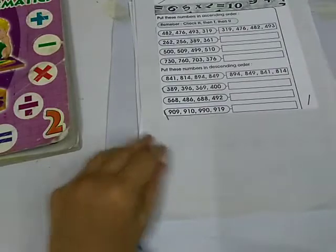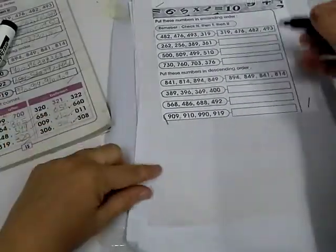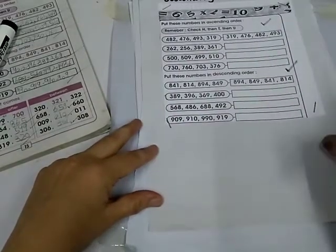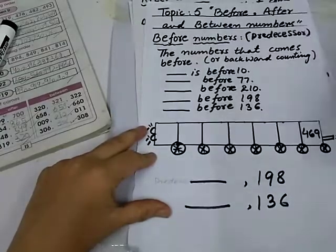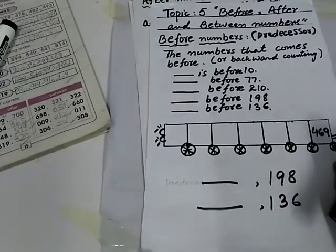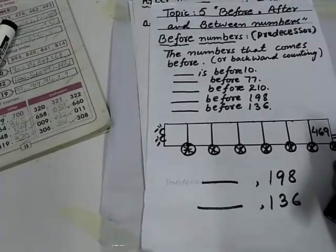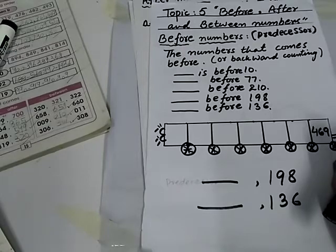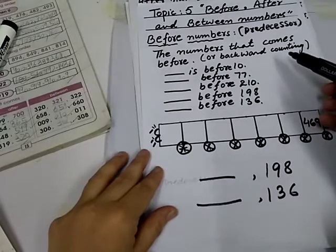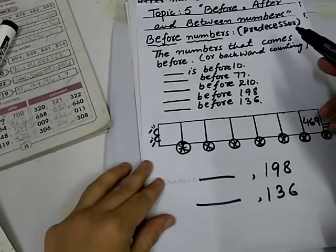Now, see your book. Page number 15. These are ascending order. And these are descending order. Now, topic number 5. Before, after and between numbers. Before number means the number that comes before. Or, backward counting. This number is also called the predecessor.